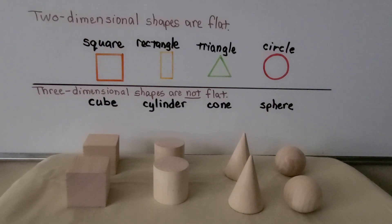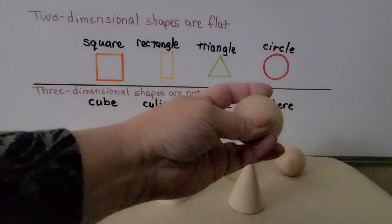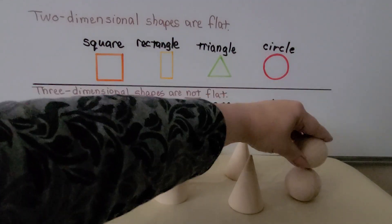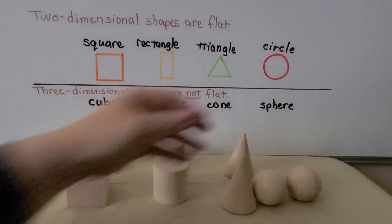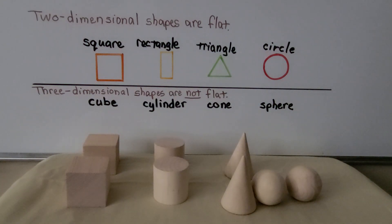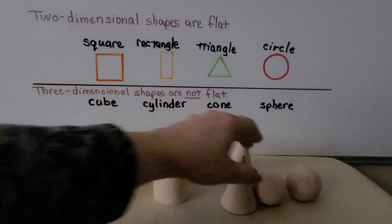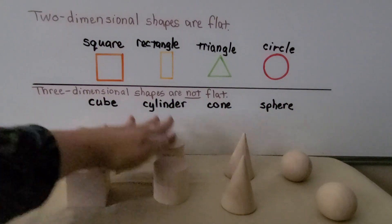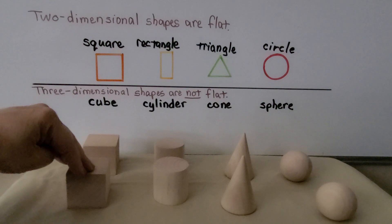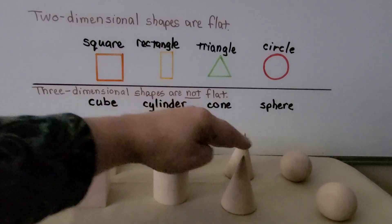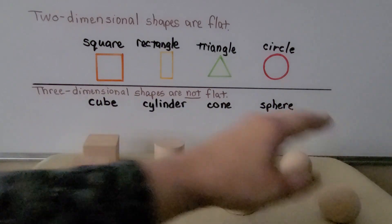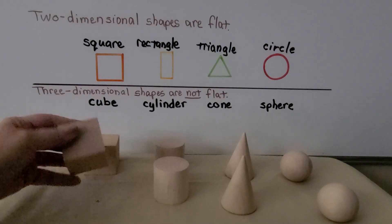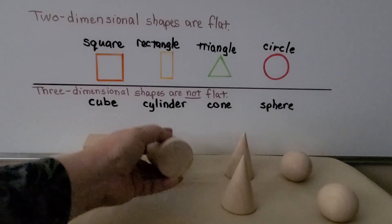A sphere has no flat surfaces — it's just like a ball. And we can't stack spheres. If we try to stack them, they'll just fall because there's no flat surface. So we can stack the cube and the cylinder, but we can't stack a cone and a sphere. If it has a flat surface on its top and bottom, we can stack them.